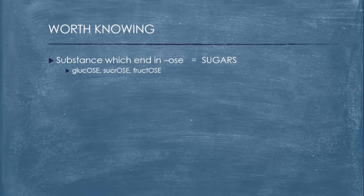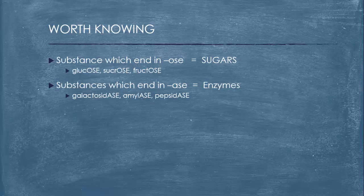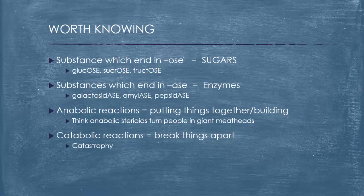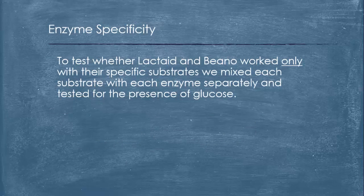Remember, substances which end in -ose are sugars like glucose, sucrose, and fructose. Substances which end in -ase are enzymes: galactosidase, amylase, peptidase. Anabolic reactions are when you put things together, when you build things. Think about anabolic steroids turning people into big muscly meatheads. Catabolic reactions break things apart, like catastrophe.